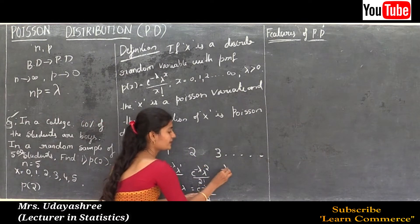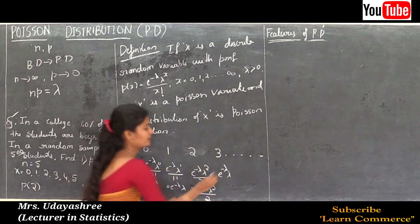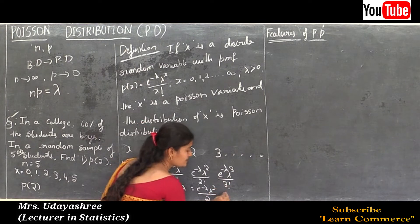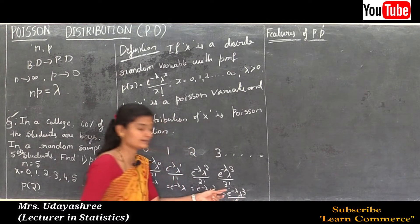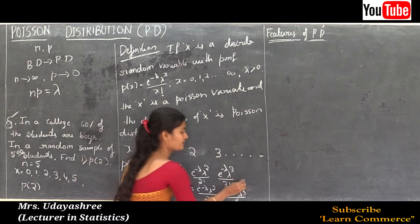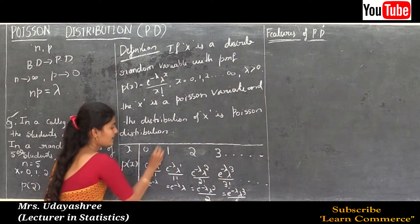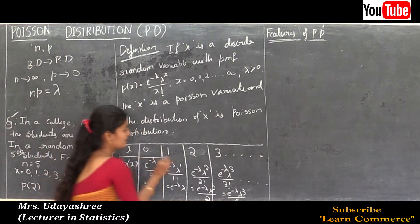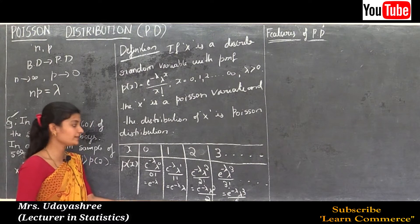For P(x = 3): substituting x = 3, we get e^(−λ) · λ^3 / 3! = e^(−λ) · λ³ / 6, since 3 factorial is 6. This tabular representation is the Poisson distribution with parameter lambda.